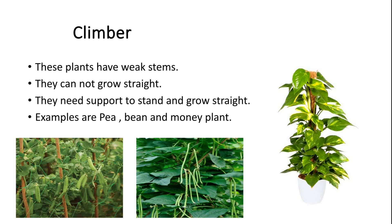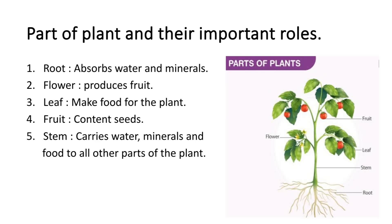Parts of a plant and their important roles: one, roots absorb water and minerals. Two, flowers produce fruit. Three, leaves make food for the plant. Four, fruit contains seed. Stem carries water, minerals and food to all other parts of the plant.